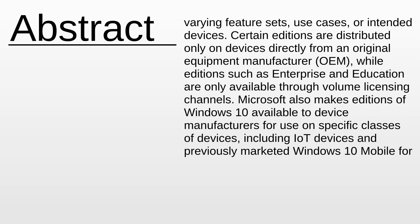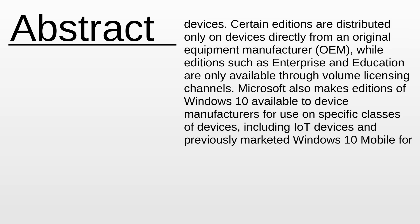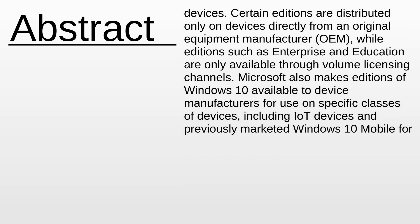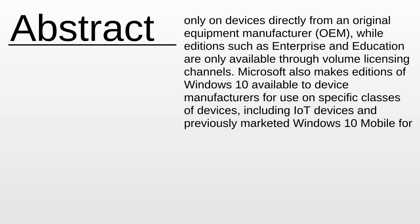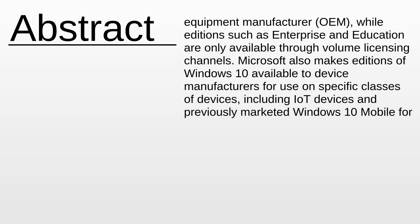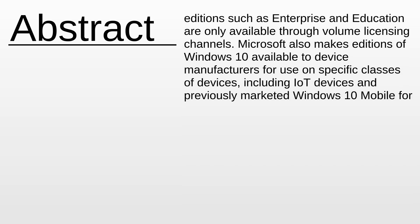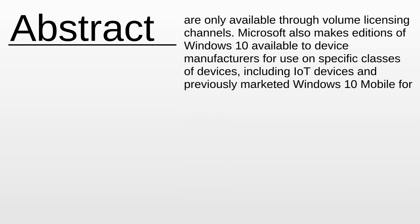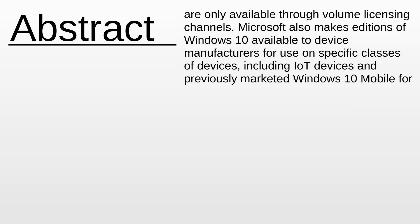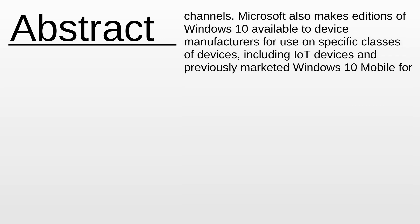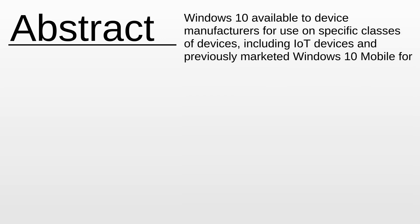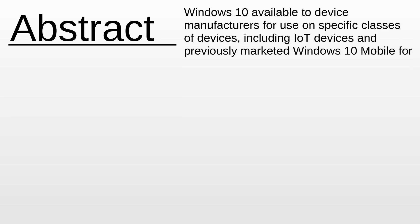Certain editions are distributed only on devices directly from an original equipment manufacturer (OEM), while editions such as Enterprise and Education are only available through volume licensing channels. Microsoft also makes editions of Windows 10 available to device manufacturers for use on specific classes of devices, including IoT devices and previously marketed Windows 10 Mobile for smartphones.